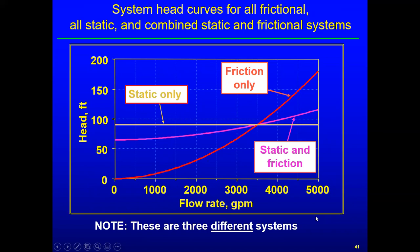There are three types of system curves. A zero static head (all-frictional) system curve passes through the origin. An intermediate system has significant static head — around 70 feet — with additional friction on top. A static-dominated curve is nearly flat — while there's no truly static-only system (any fluid flow creates some friction), some systems are so dominated by static head that the curve appears nearly horizontal. Combining these with pump curves shows how each system type reacts differently to pump operation.